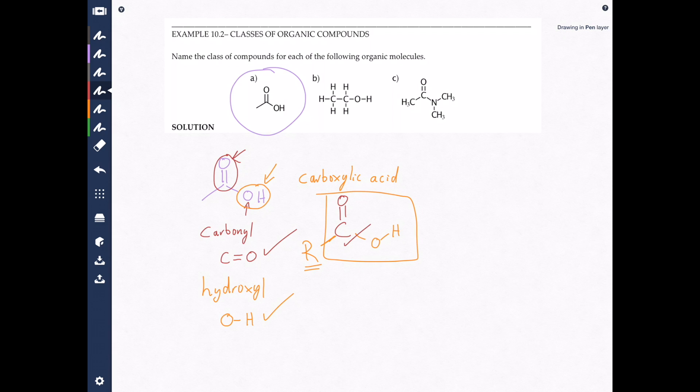Always, that's always a carboxylic acid. It doesn't really matter what's out here, you can just use R where R is essentially any group you can think of. The hydroxyl is bonded directly to the carbonyl carbon. That's how you want to look at these things - look for what I call landmarks like carbonyl and hydroxyl. There's only one class you have to know with both, and that's carboxylic acid.